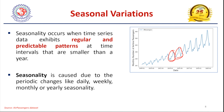Seasonality is just opposite to trend — trend takes the longer period of time, but seasonal variation observes repeated patterns over a shorter period of time, like weekly, monthly, or sometimes on a yearly basis.